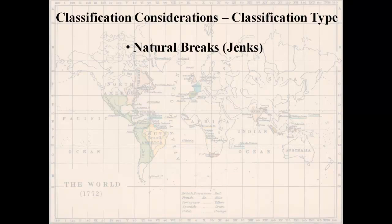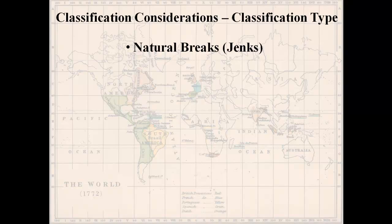Now, classification type. There are quite a few types available in ArcGIS. One is called natural breaks, or Jenks — an algorithm that looks at your data and decides where the data fit naturally, grouping measures that are similar together. It looks at the breaks that occur naturally in the data, regardless of where they are, and tries to set intervals that group similar measures.